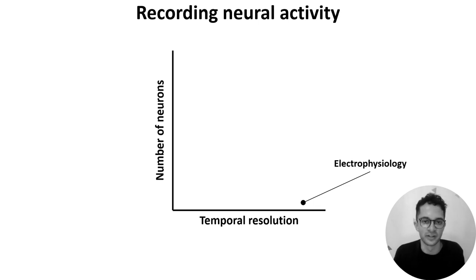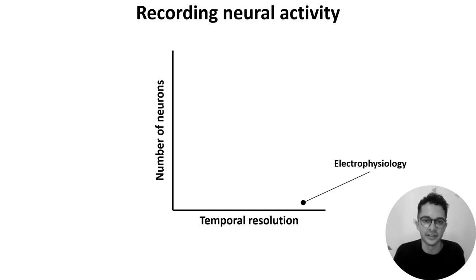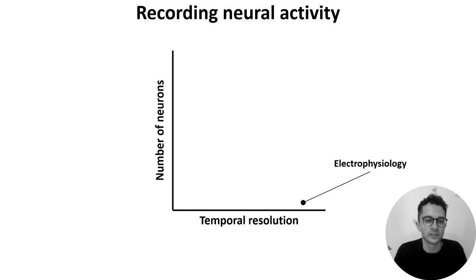In previous videos, we introduced electrophysiology, a technique which lets you record a single neuron with high temporal resolution, which would sit here on this graph. To get data from more neurons with this approach, studies will often record different neurons sequentially over different trials, and then pool the data over trials and subjects. But even so, you are often limited to tens to hundreds of neurons, and pooling them in this way isn't really ideal. So how can we record more neurons simultaneously?